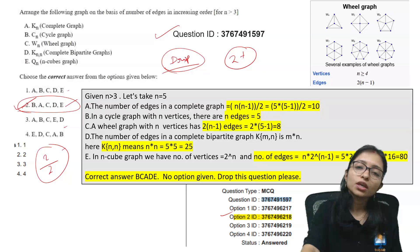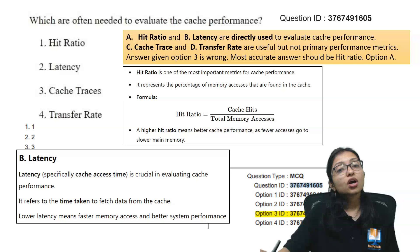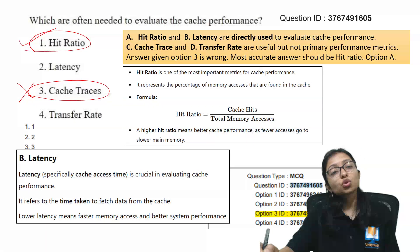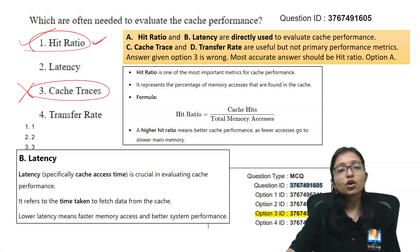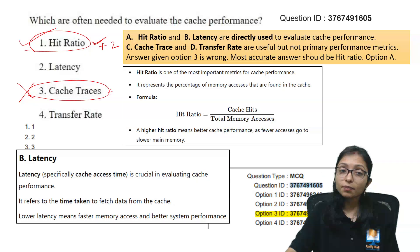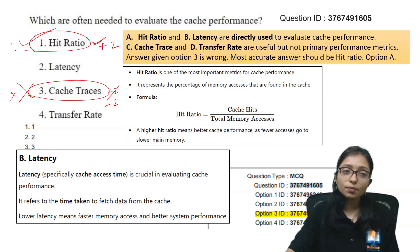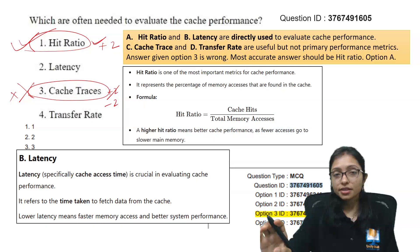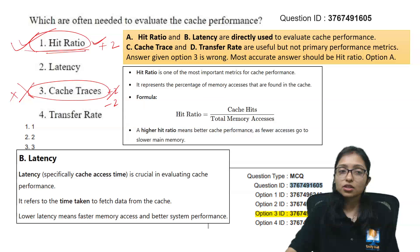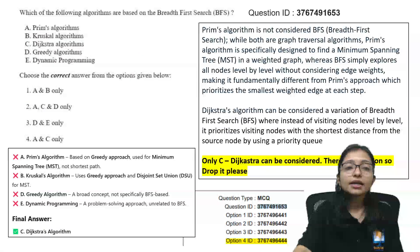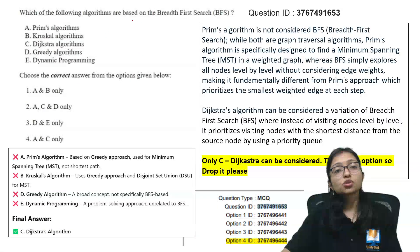This question is definitely wrong — they gave the answer as 'cache stress,' which is not the correct answer. The most preferable correct answer should be 'hit ratio.' Those who marked option A can challenge — if you marked option A, you can challenge and will get +2. Those who marked option 3 already got +2, but here they will get -2 because if this challenge is accepted, option 3 becomes wrong and the correct one becomes correct. Those who marked option 1 will get marks — you can definitely challenge and download the supportive document from the Telegram channel.